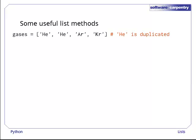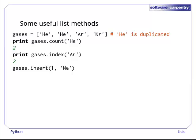To show you how this works, here are a few useful list methods. Let's create the gases list again, but with HE duplicated at the front. Gases.count HE tells us that HE occurs twice in the list. Gases.index AR tells us that the index of the first occurrence of AR is two. Remember, indexing starts at zero, so element two is the third element of the list. Gases.insert takes two arguments, the index where we want to insert something, and the something we want to insert. It doesn't return any value. But, if we print out the list after calling it, we can see that NE has been put at location one, and everything above that has been bumped up to make room, leaving us with a list of five elements.